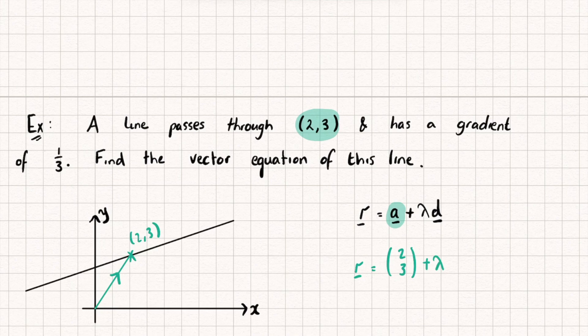What is that direction vector? We know the gradient is one third, and the gradient tells us the change in y divided by change in x. So if we travel three units across in x and one unit up in y, we get back onto the line — that's exactly what the gradient means. So the direction vector is (3, 1): three across in x and one up in y. From that we've found the vector equation of this line.